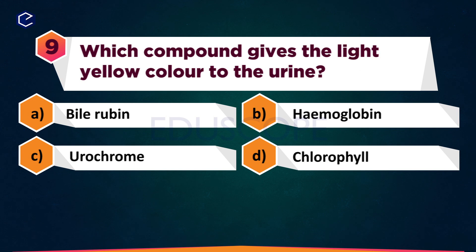Which compound gives the light yellow colour to urine? A: Bilirubin, B: Hemoglobin, C: Urochrome, D: Chlorophyll.